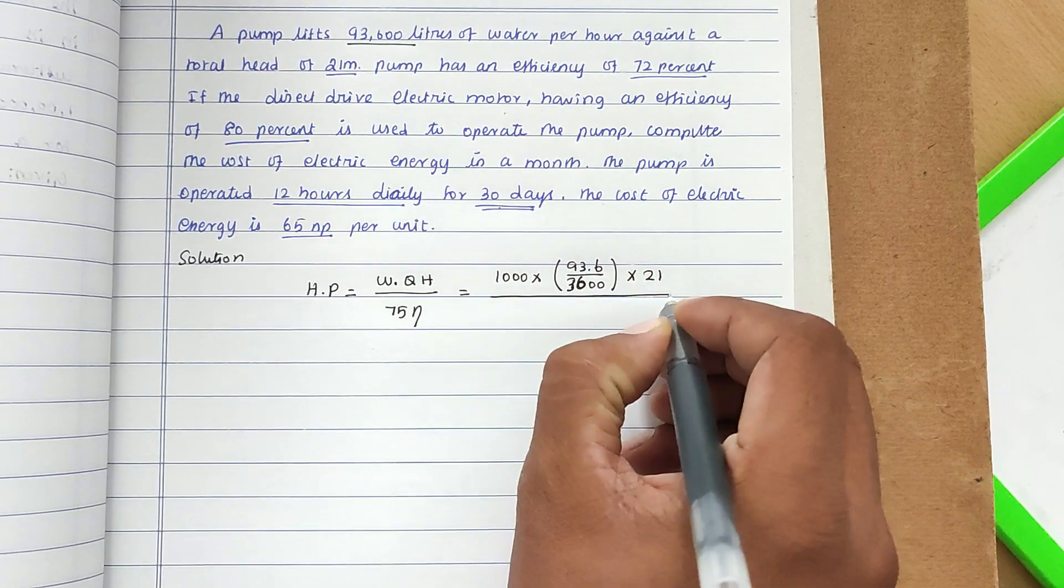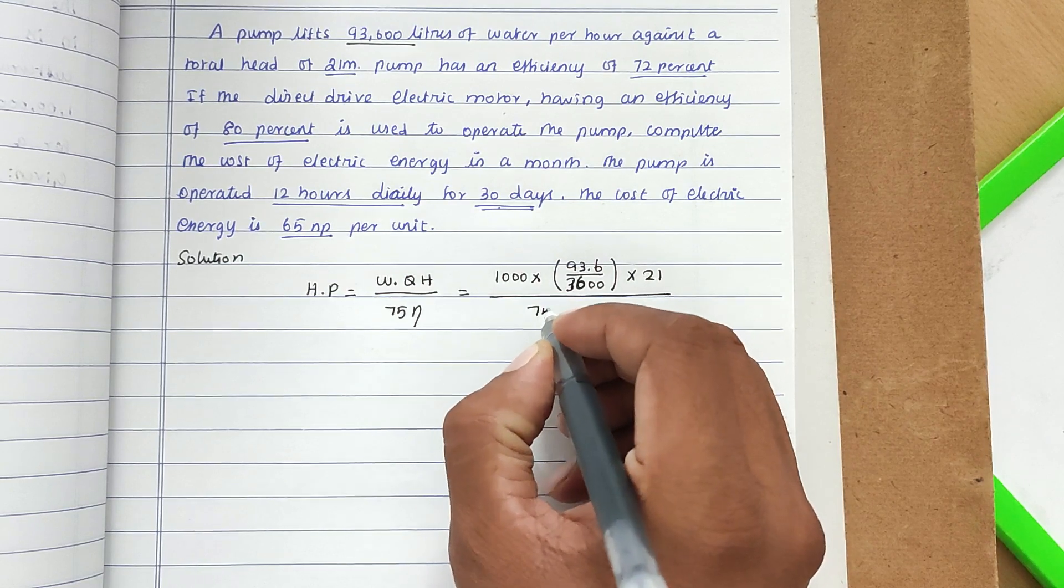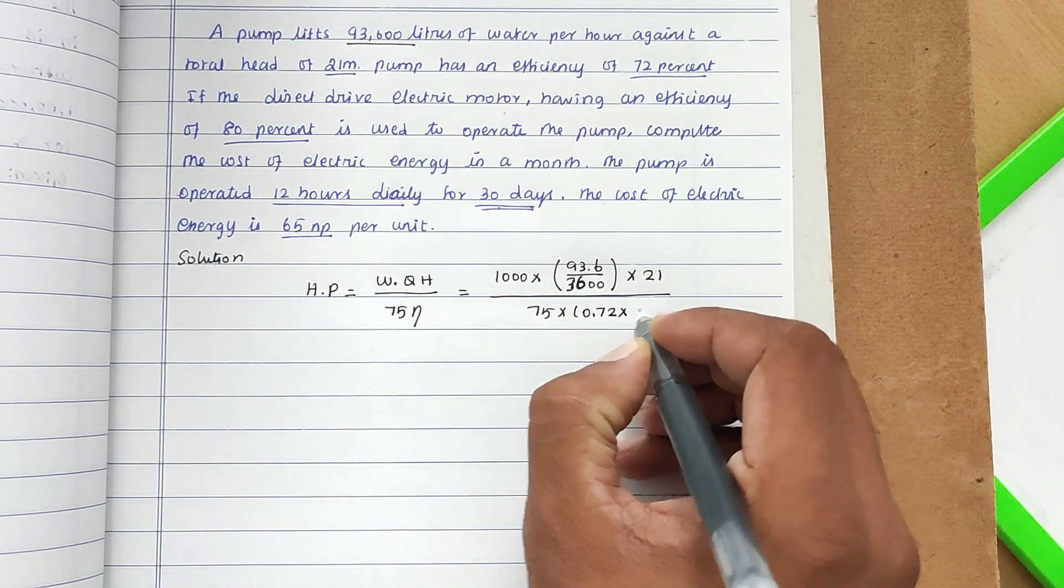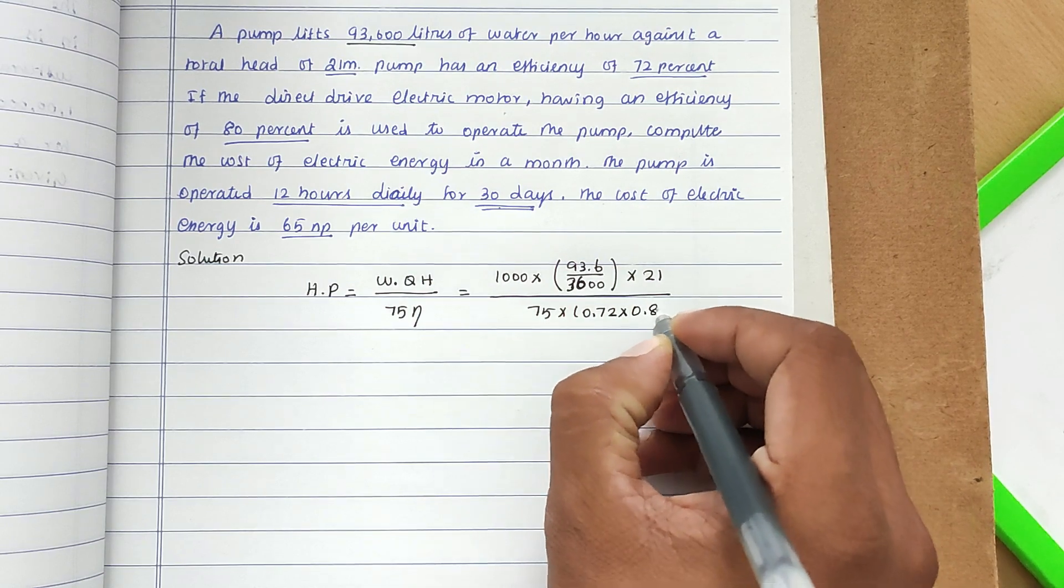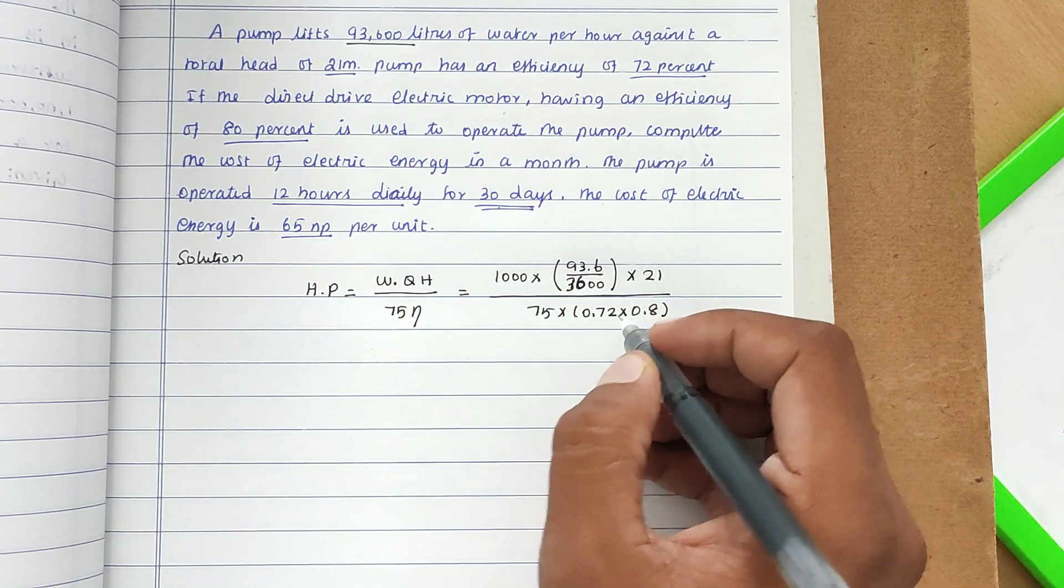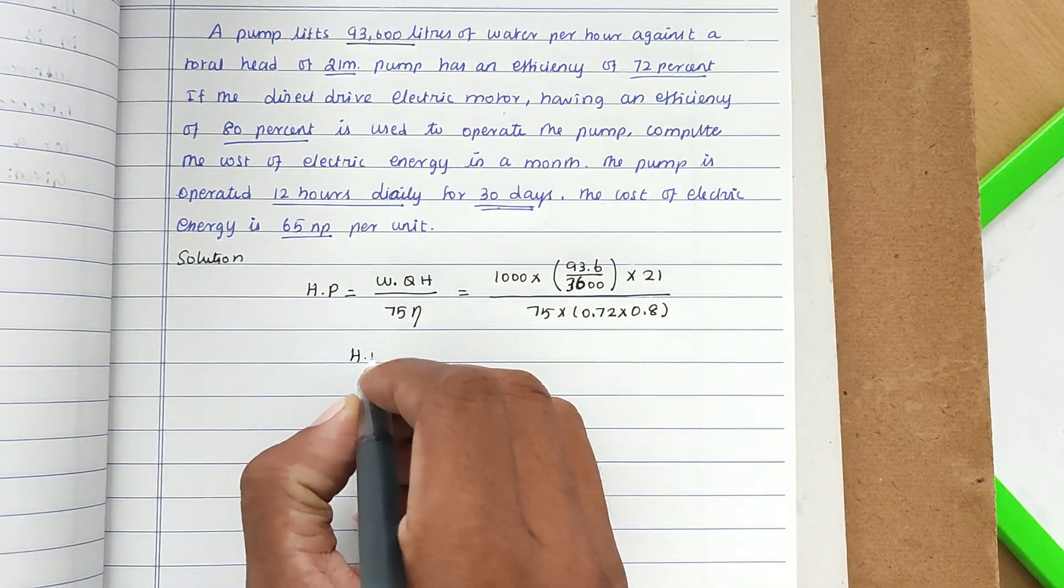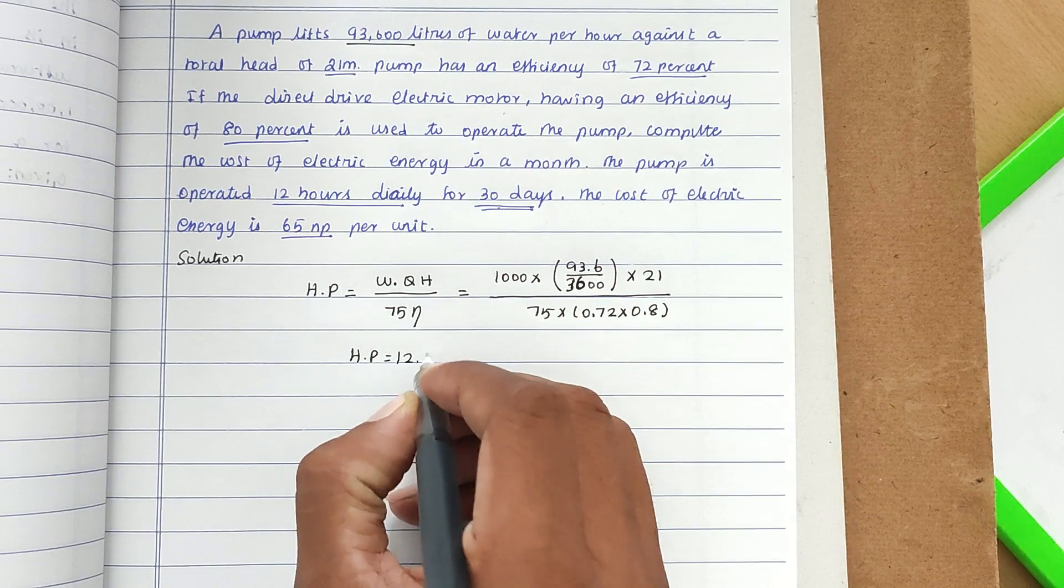Divided by 75 × the efficiency, which is 72%, so 0.72 × 80% efficiency, 0.72 × 0.8. Solving this, we get HP = 12.64.